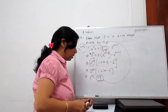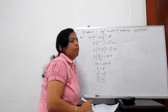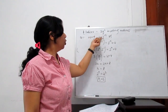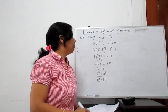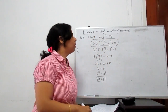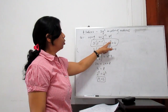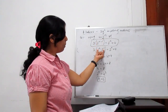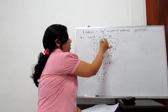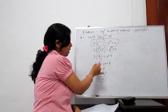Next, some more examples regarding equations involving indices. The first example uses the substitution u equals 2 to the power n to solve the given equation. The problem is 3 times 2 to the power n minus 1 equals 2 to the power n plus 4. First separate the terms, then replace 2 to the power n with u everywhere.